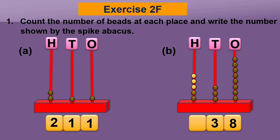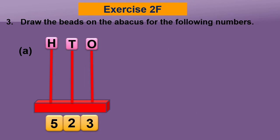There are five beads in the hundreds spike, so write five in the hundreds place. The number is five hundred thirty-eight. Next, here we have the number five hundred twenty-three.